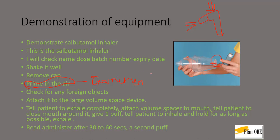The volume spacer device will be present on the table, so lift it up. It is in two parts — you just need to attach both of them to make a funnel shape. It has a big protruded end and at the other end there is a small flat hole. The protruded end goes inside the patient's mouth, and you attach the inhaler at the flat end where there is a hole. It's quite simple.